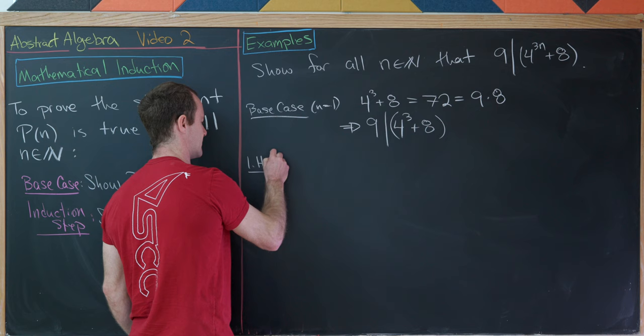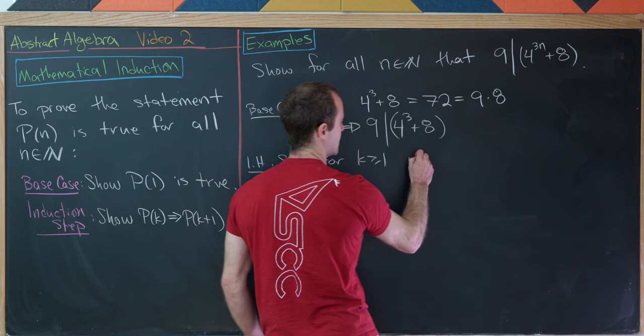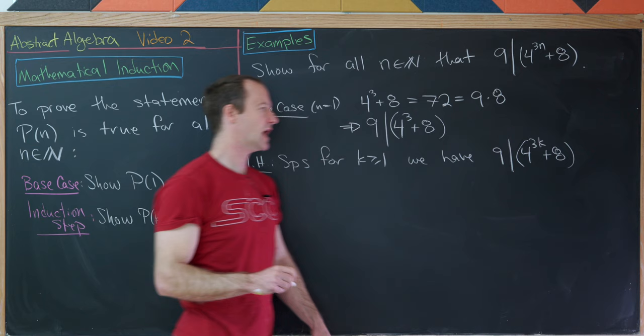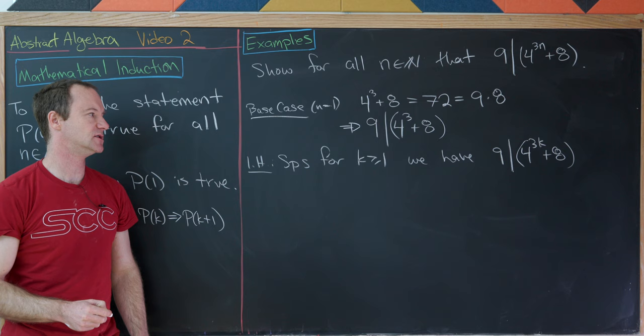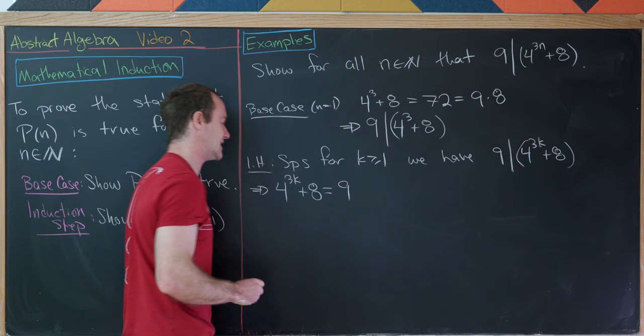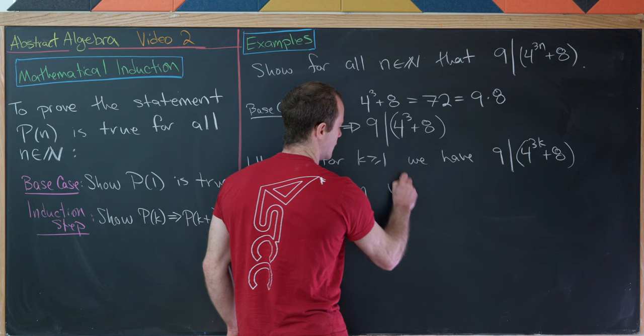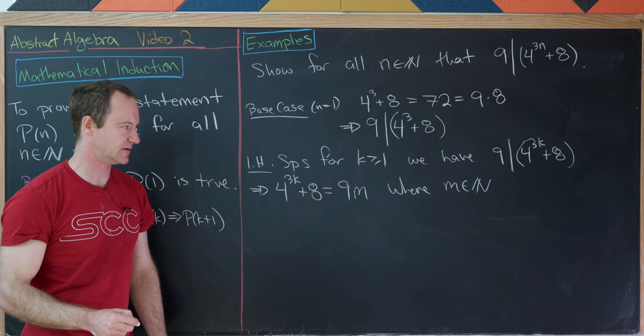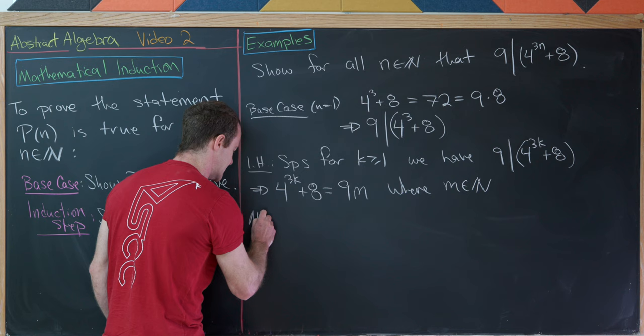Now let's make an induction hypothesis. Suppose for some K ≥ 1 that 9 divides 4^(3K) + 8. Let's decode this into an equation: 4^(3K) + 8 = 9M, where M is a natural number. By the definition of divisibility, we just need it to be an integer, and since everything is positive, it's definitely a natural number. Now let's consider the K+1 case — we look at 4^(3(K+1)) + 8.